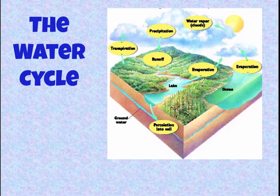The water cycle you've probably known since you were a kid, though this slide is a little hard to see. Precipitation is when rain falls to the earth, then it runs off the land and into lakes, and it percolates into the soil. There's groundwater underneath the soil, and all of that water eventually drains into the oceans, where it evaporates, condenses into clouds, and returns back to the earth.